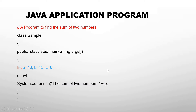Now let's look at a Java application program. The first line, starting with double backslash, is called a comment. Every application program is written within a class. Since Java is case-sensitive, the keyword 'class' starts with a small 'c', while the first letter of the class name is capital. You need to remember these rules.